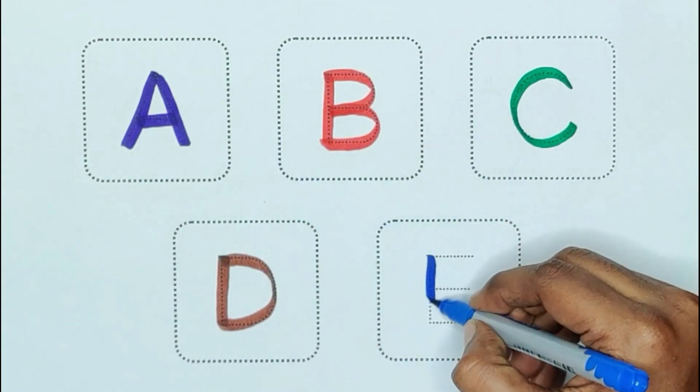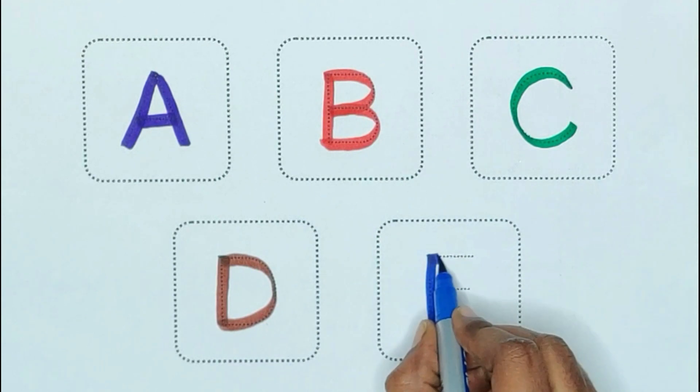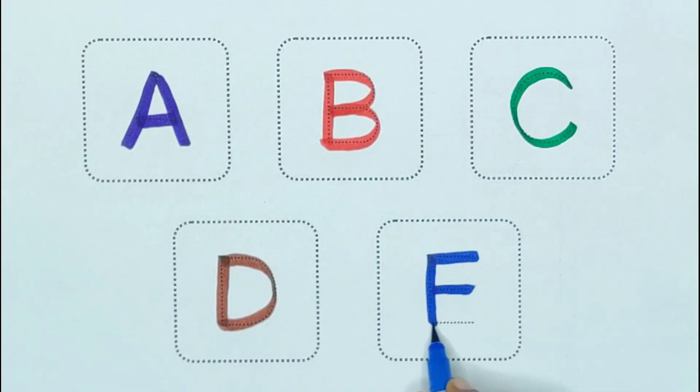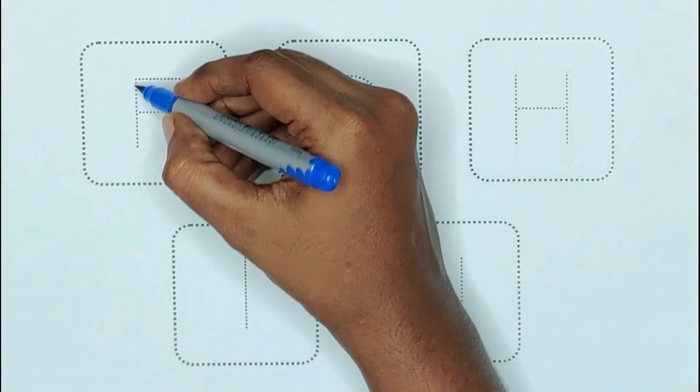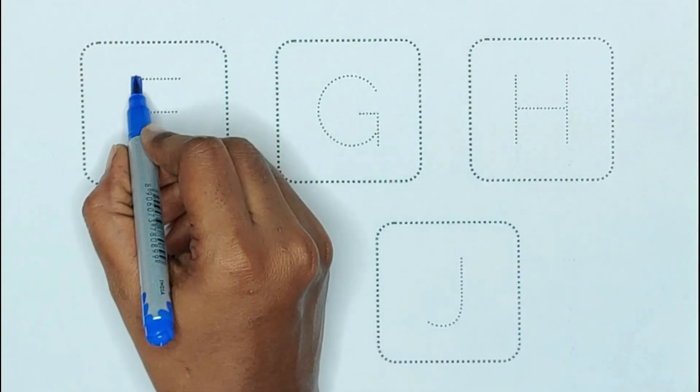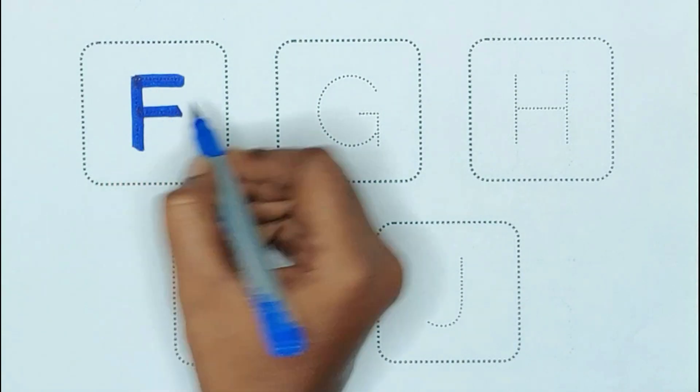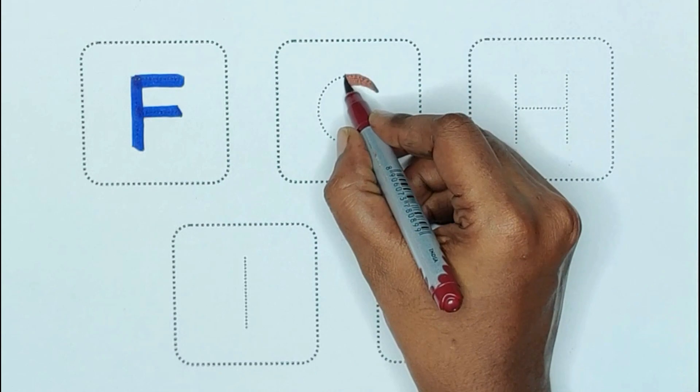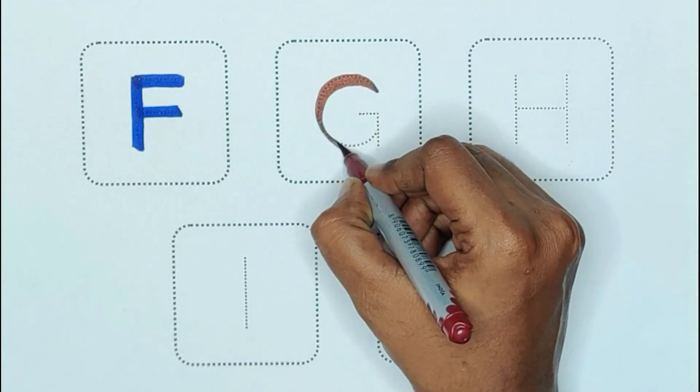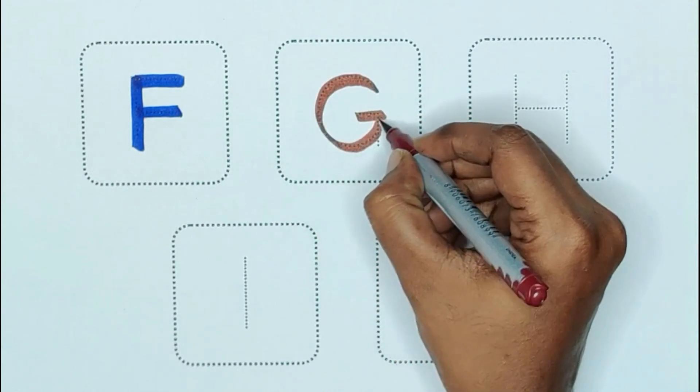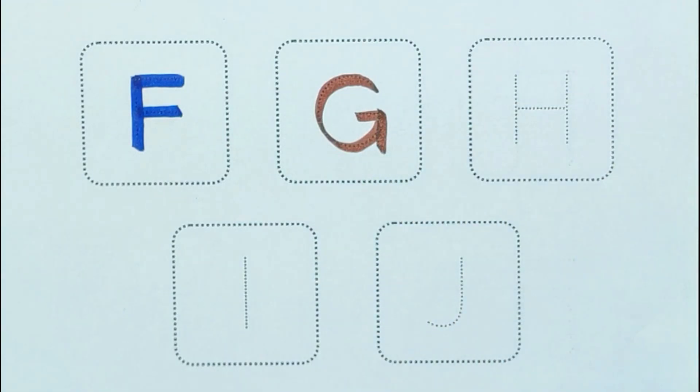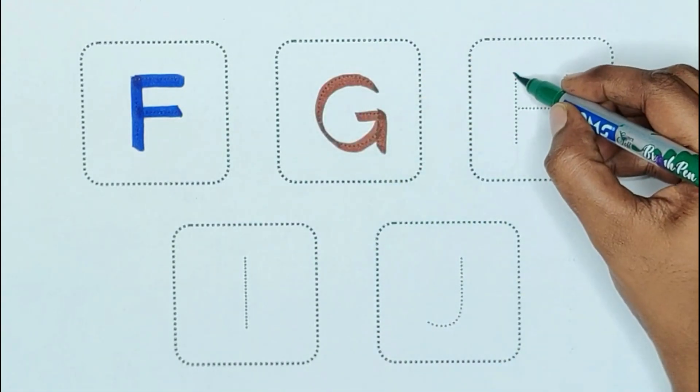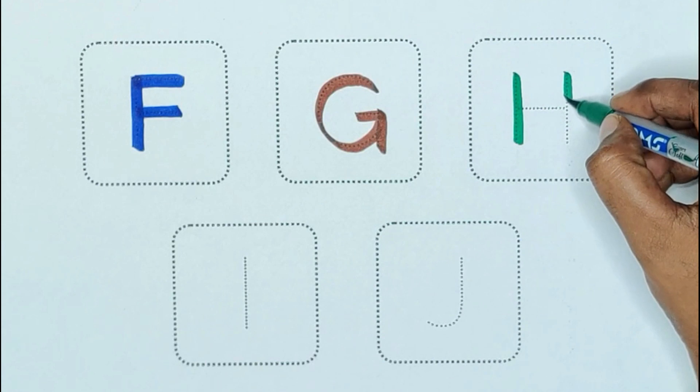Blue color, E, E for eagle. Blue color, F, F for fig. Brown color, G, G for guitar. Green color, H, H for house.